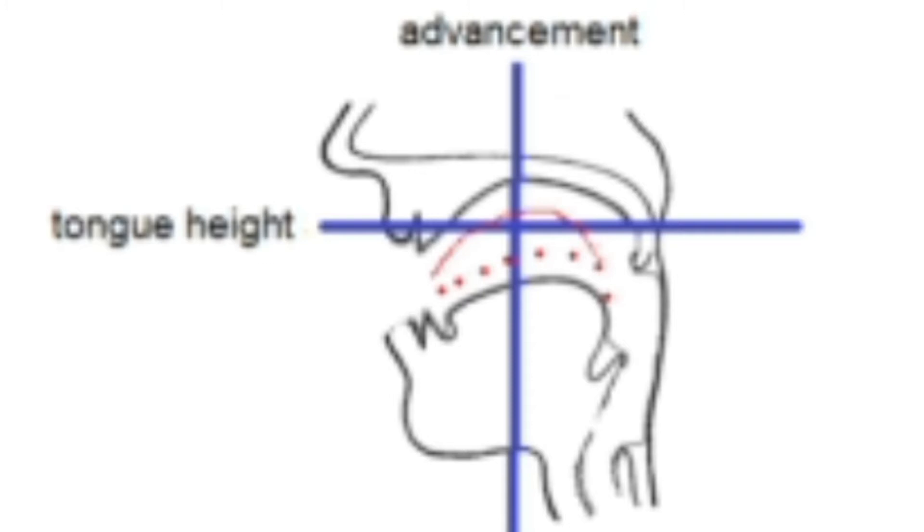Tongue height means how high the tongue is placed in the mouth. The way we move and shape our tongue plays a big part in giving each vowel its own sound. When we pronounce a vowel, even a small change in the position of our tongues can make a big difference in how the vowel sounds. The vertical position of the tongue can be high, middle, or low.